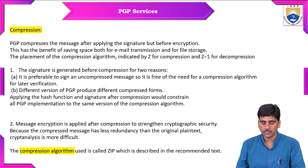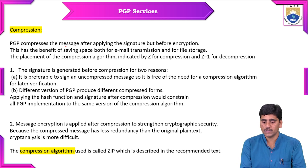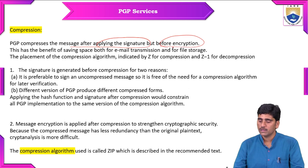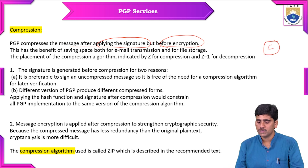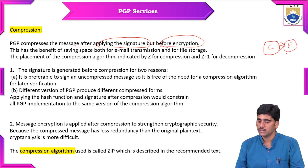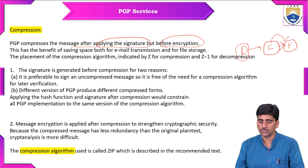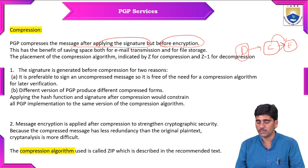PGP compresses the message after applying the signature but before encryption. The compression process is done before encryption but after the digital signature. This has the benefit of saving space both for email transmission and for file storage. The placement of the compression algorithm is indicated by Z, and Z-inverse is used for decompression.